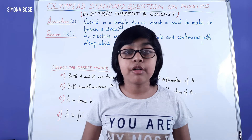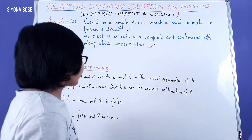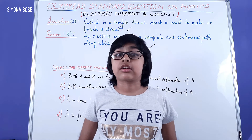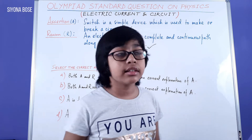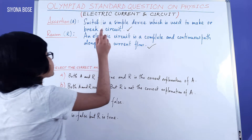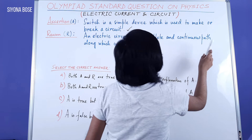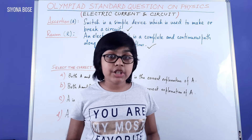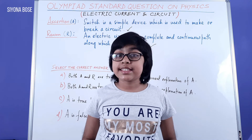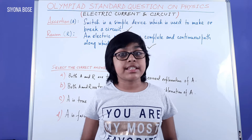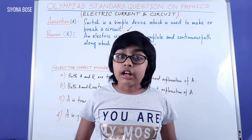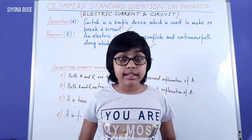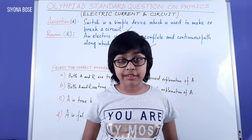Now that we've understood both assertion and reason are correct, we can immediately eliminate C and D, and now we can concentrate on A and B and analyze whether R has any relation with A or not. By reading the reason — an electric circuit is a complete and continuous path along which current flows — this has a relation with A because if any switch exists in the circuit, if the switch is off that means current does not flow, and when the switch is on, current does flow. So this proves that R has a relation with A. Therefore, R is the correct explanation of A.